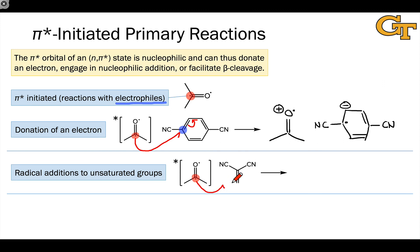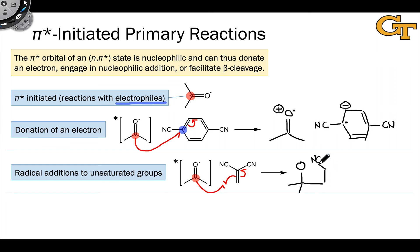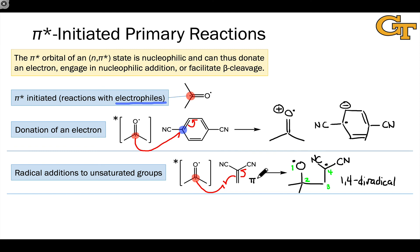The electron flow for pi*-addition to an electron-poor pi-system is similar to previous additions: a bond forms through contribution of one electron each, and the remaining odd electron in the pi-system lands on the other end. We again end up with a 1,4-diradical structure, but now one radical electron is located on oxygen — the former carbonyl oxygen — and the other is located between, or alpha to, the two electron-withdrawing groups. The key orbital interaction is the pi* CO orbital as electron donor and the pi* CC orbital of the dicyano-alkene as electron acceptor.